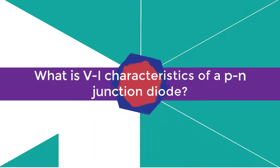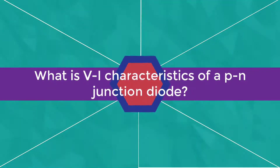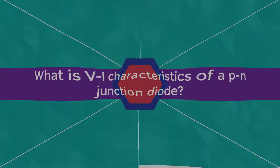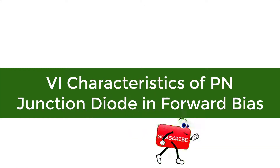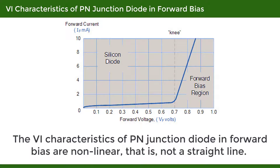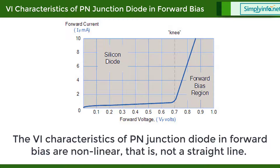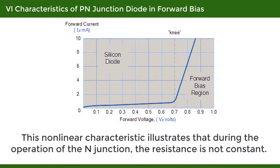What is the VI Characteristics of a PN Junction Diode? The VI Characteristics of a PN Junction Diode in Forward Bias are nonlinear, i.e., not a straight line. This nonlinear characteristic illustrates that during the operation of the PN Junction, the resistance is not constant.